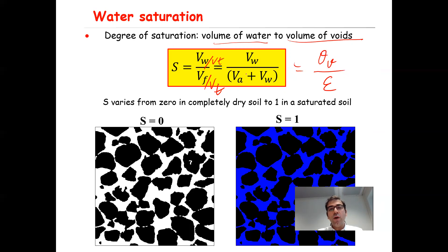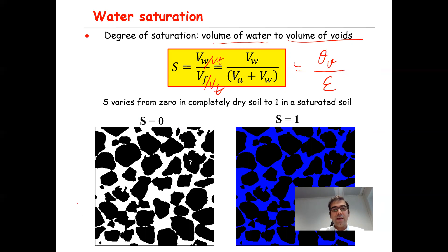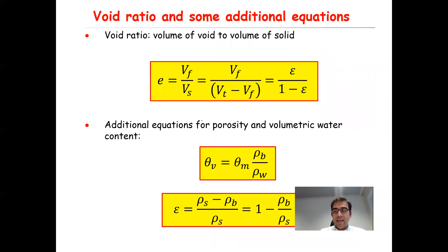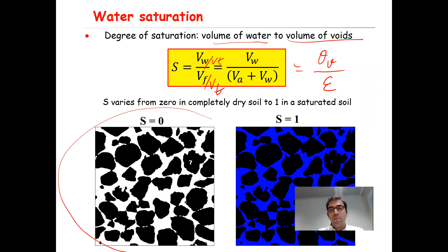The value of saturation varies from zero in a completely dry sample to one in a saturated soil. If Vw equals zero, the saturation will be zero — the black color is the sand grain, the white color is the air phase, there is no liquid phase, meaning the system is completely dry, and therefore saturation equals zero.